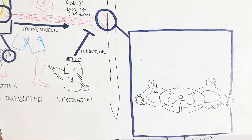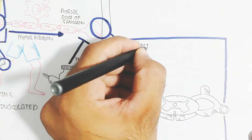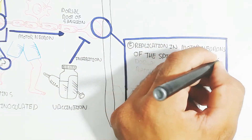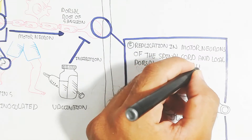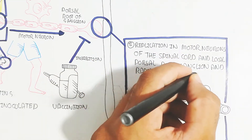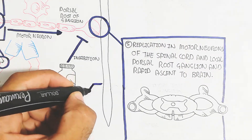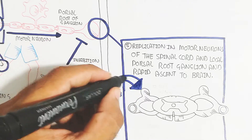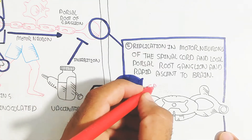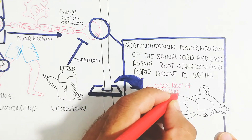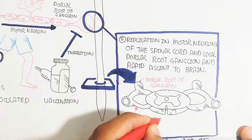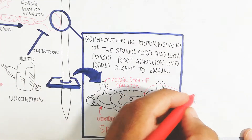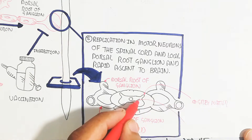The fast axonal transport of the virus moves toward the spinal cord. Step five is replication in motor neurons of the spinal cord and the local dorsal root ganglion, followed by rapid ascent to the brain. The cross section of the spinal cord contains the dorsal and ventral root of ganglion as part of the peripheral nervous system, while the gray matter and white matter are part of the central nervous system.